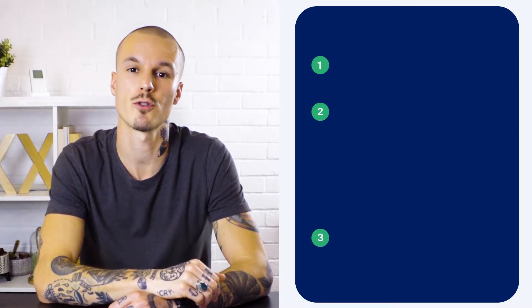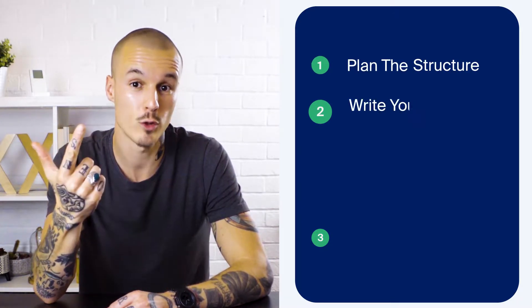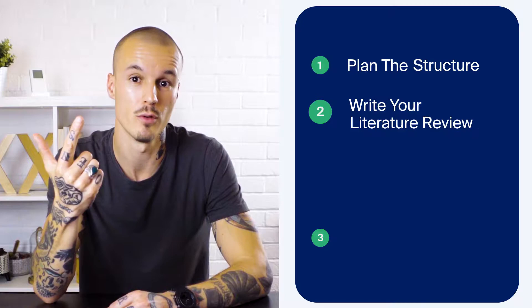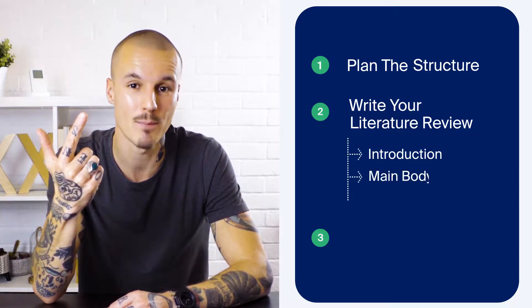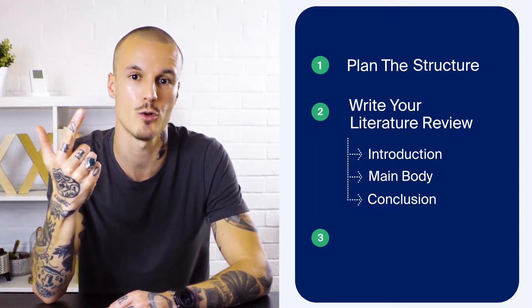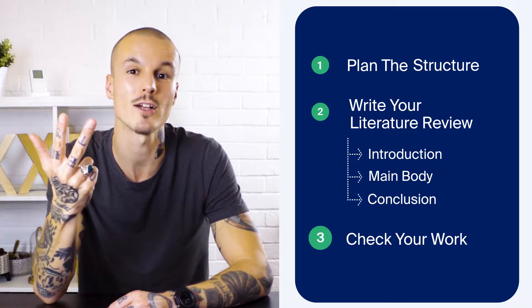The three steps to writing your literature review are: plan the structure, write your literature review including the introduction, main body and conclusion, and finally check your literature review.